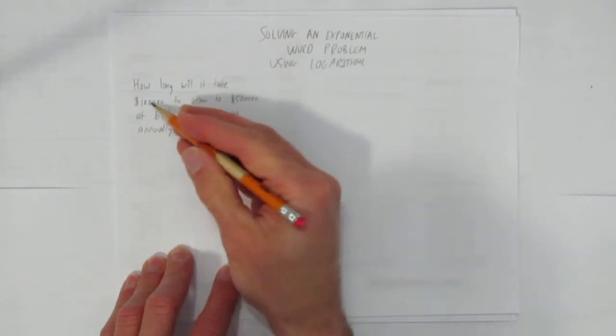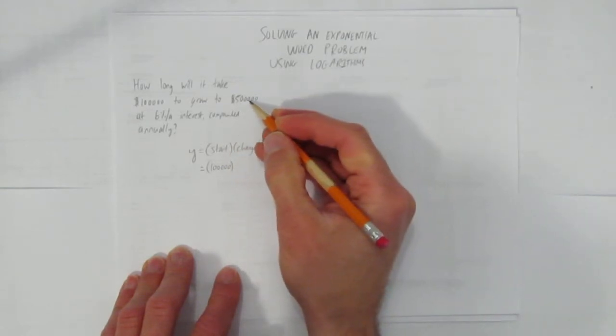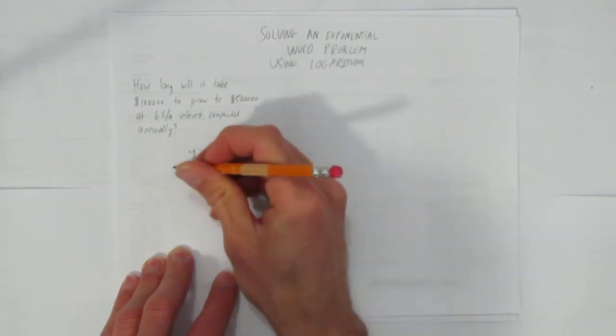I know the start value, that's just $100,000. And I know the end value, that's going to go in the y spot, that's $500,000.